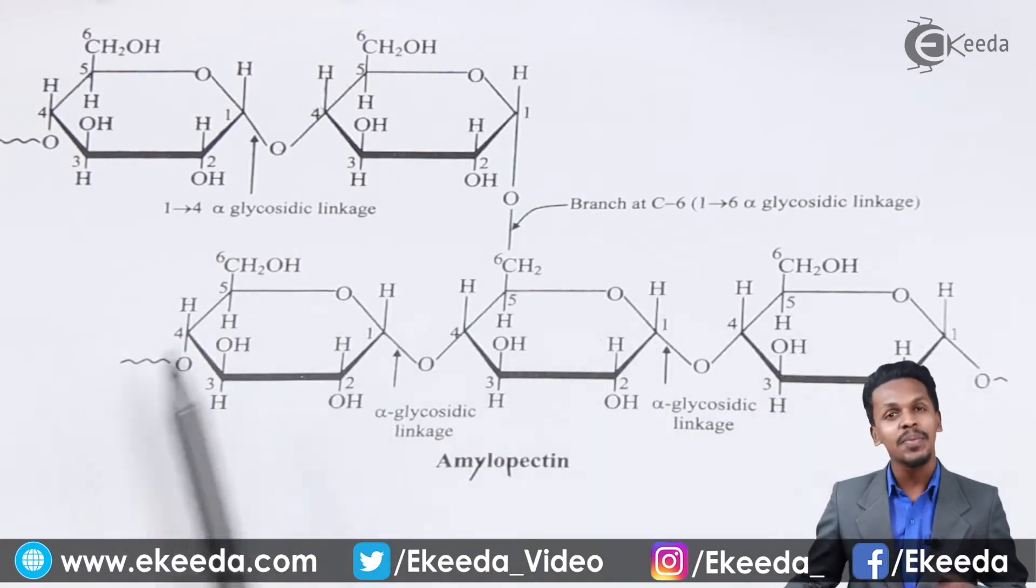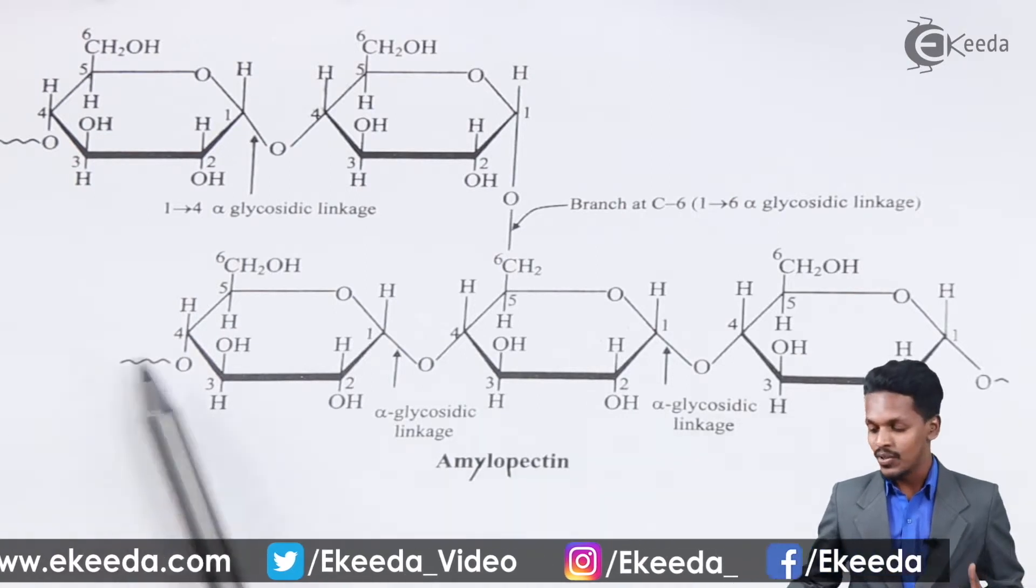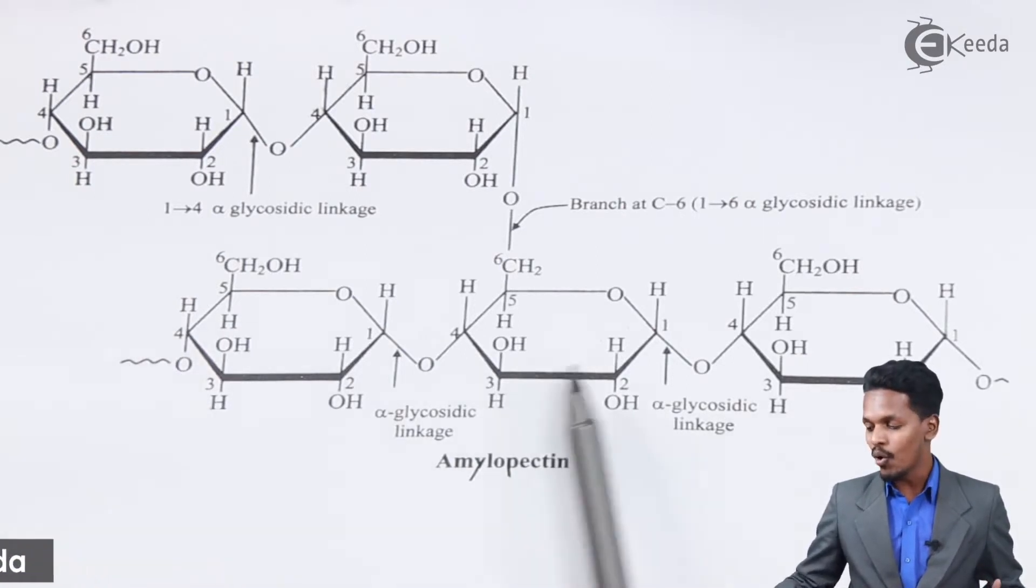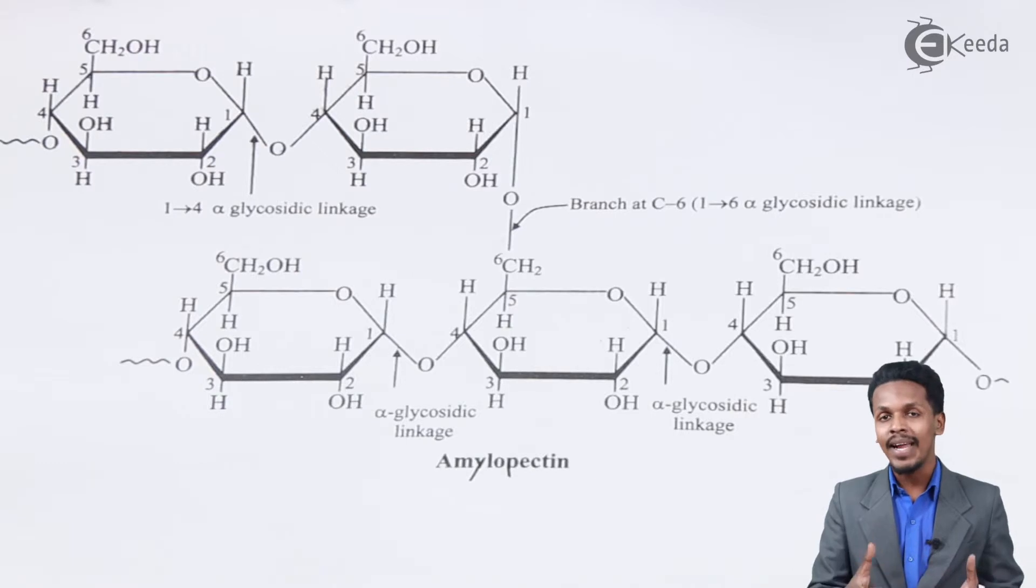...that this unit is very similar to the previous one we talked about: amylose. Here, it is basically a polymer of amylose, as we can see. But amylopectin is a branched form of amylose, and that is...